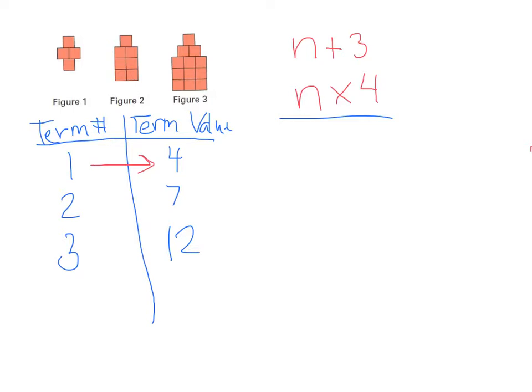One plus three equals four so it works for the first term, but the second term is a two, so let's try that. Two plus three equals five, but my term value is seven, so that doesn't work for me. Unfortunately we know then that this one is not the correct expression. Let's try the other one. One times four definitely does equal four, so that works for me, but two multiplied by four again does not give me seven. So again I know that this is not the correct expression.